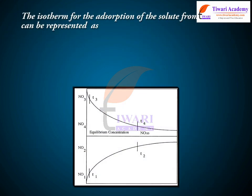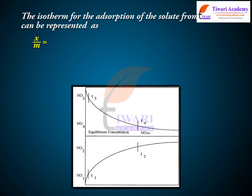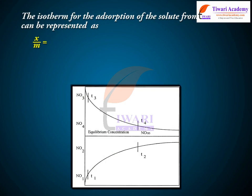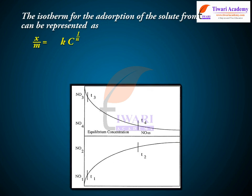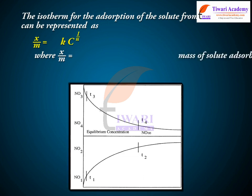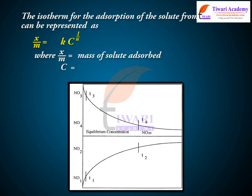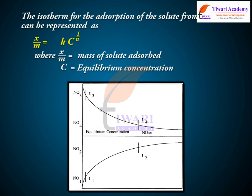The isotherm for the adsorption of solute from solution can be represented as x/m = k·c^(1/n), where x/m is the mass of solute adsorbed and c is the equilibrium concentration.